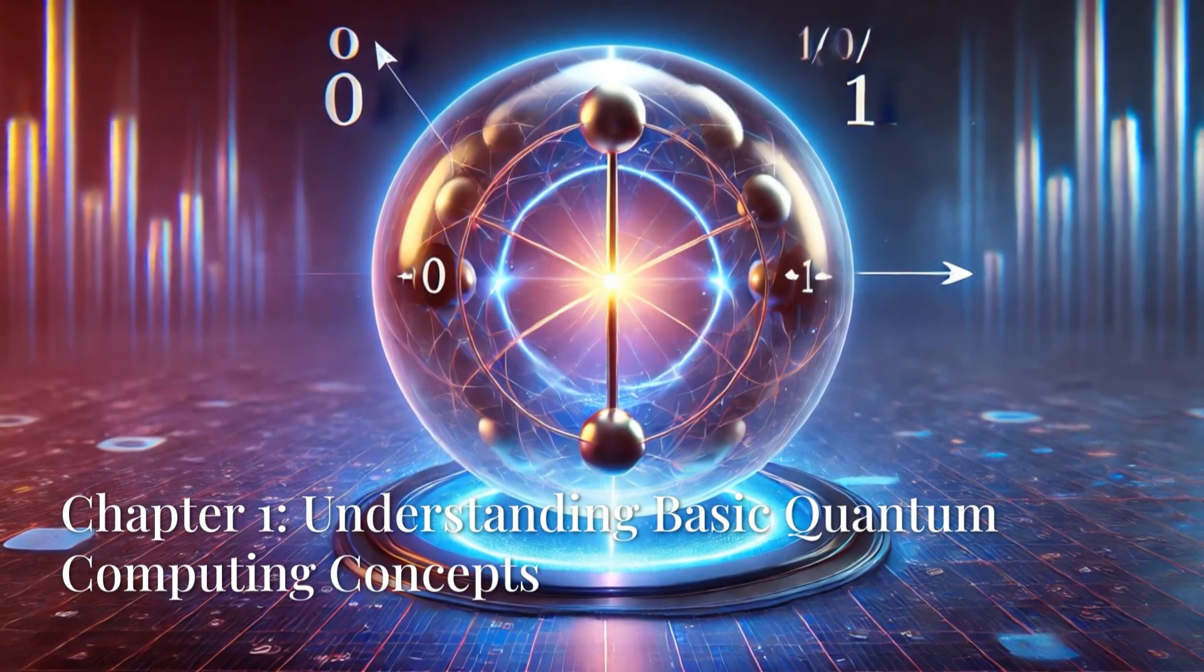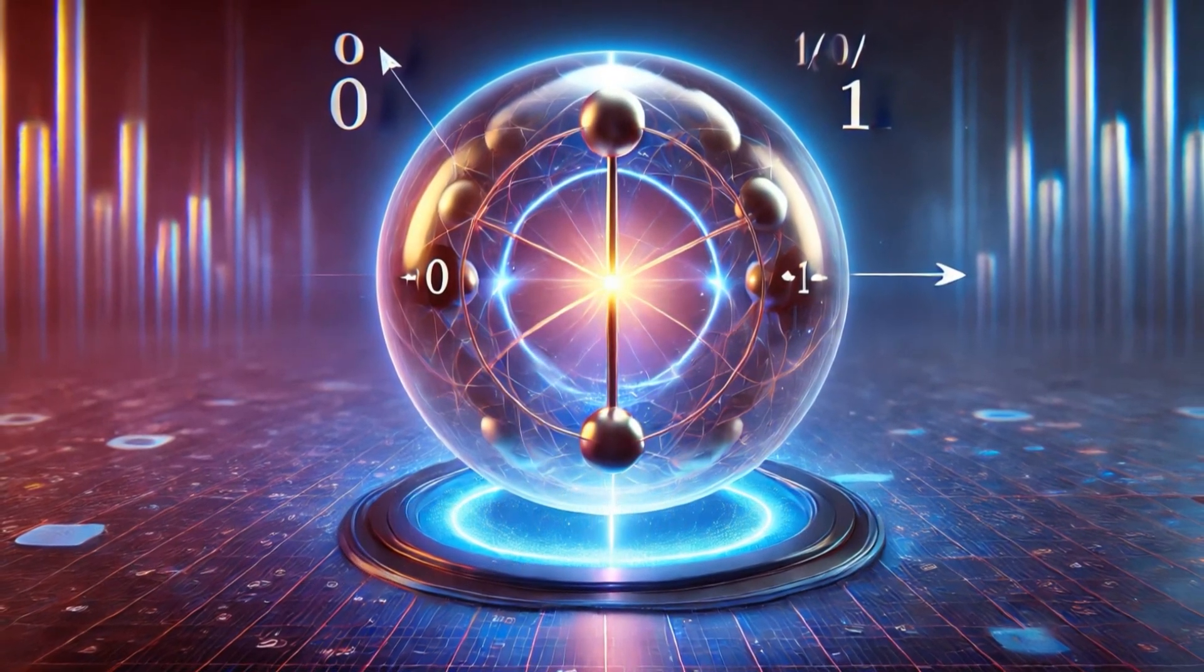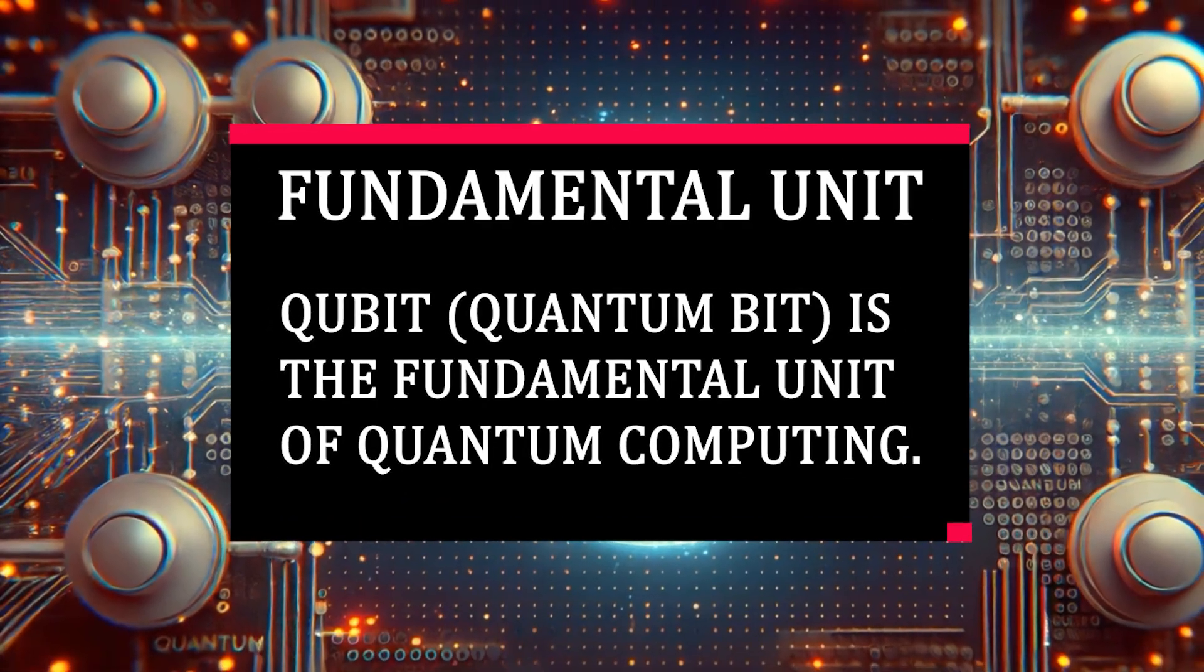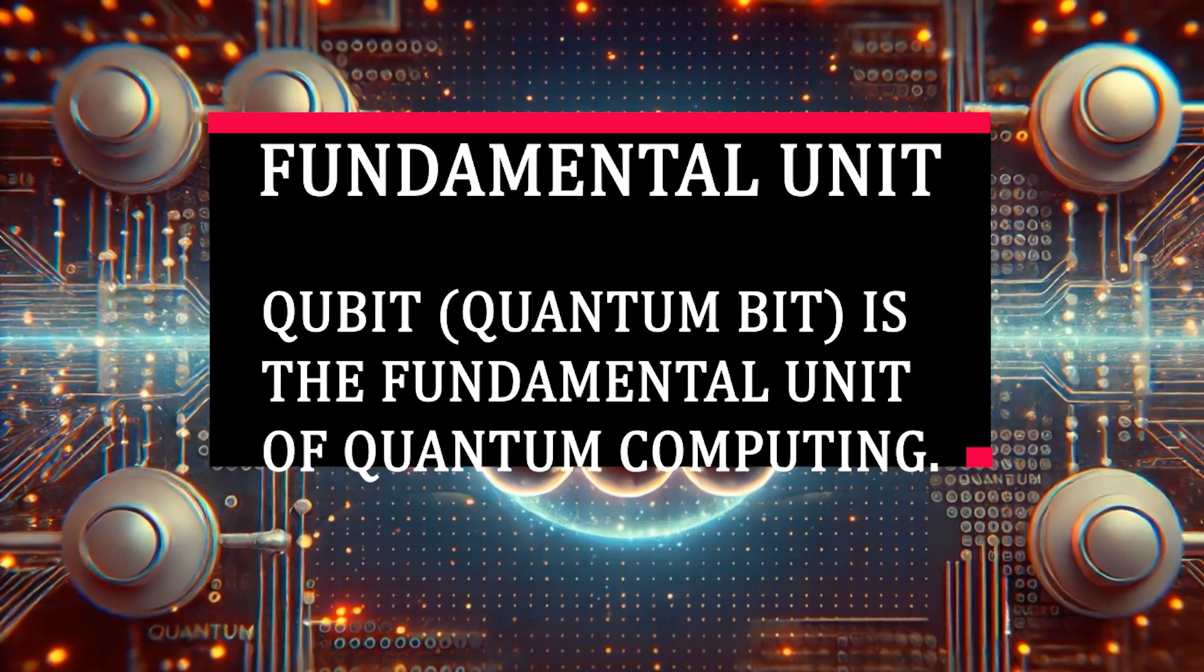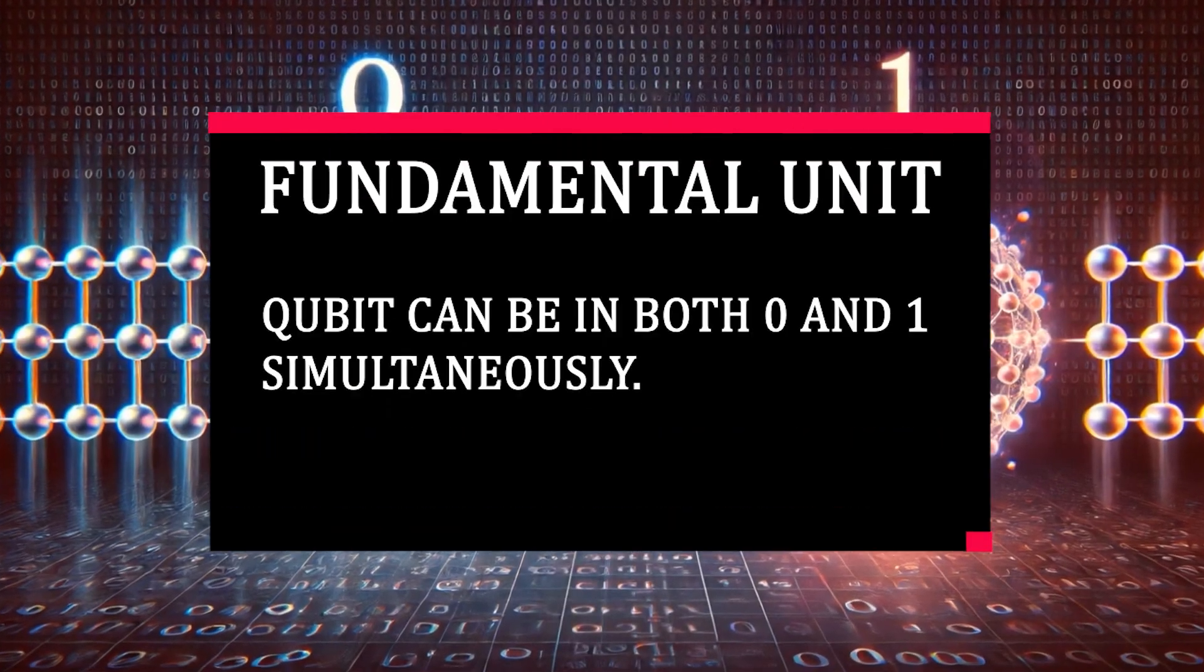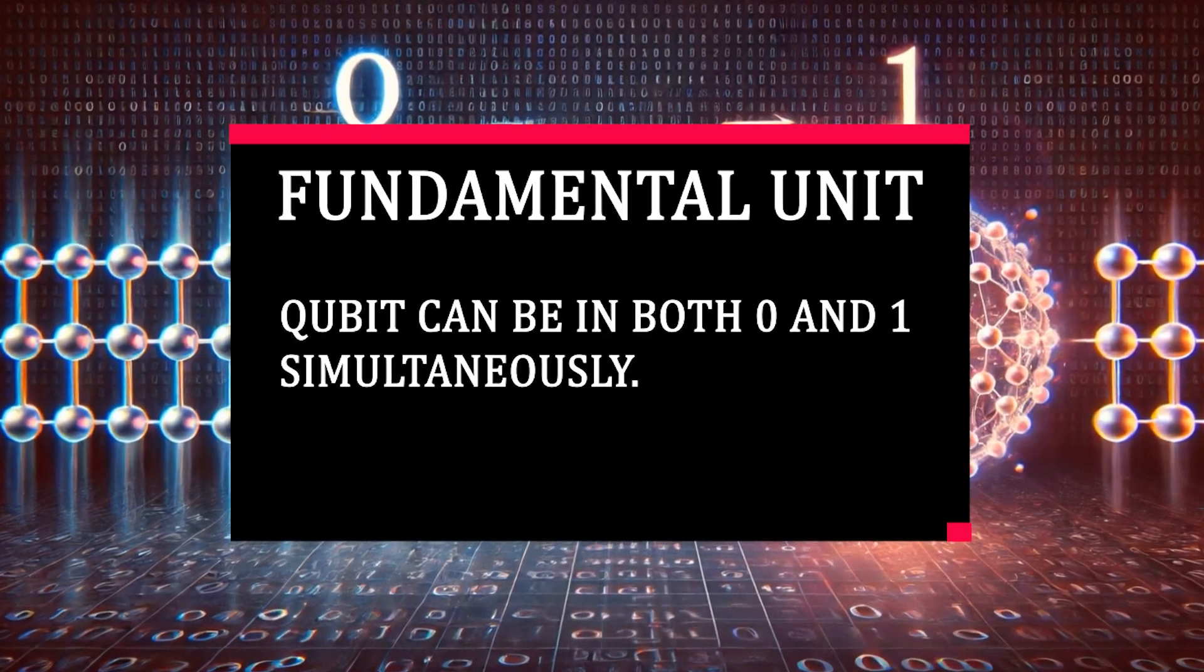A qubit, short for quantum bit, is the fundamental unit of quantum computing. Unlike a classical bit which can be either zero or one, a qubit can be in both zero and one simultaneously. This property is called superposition and it gives quantum computers their remarkable power.